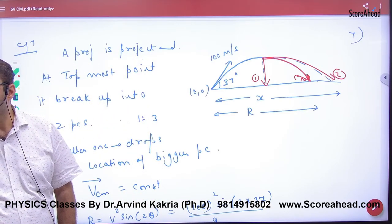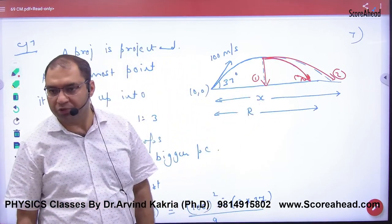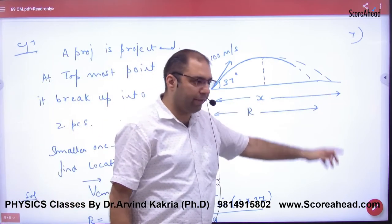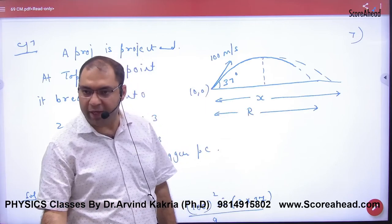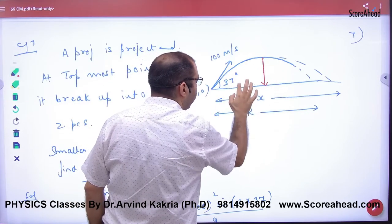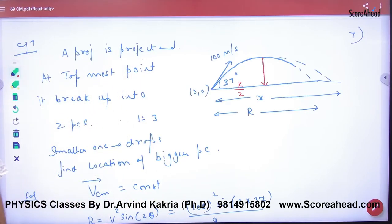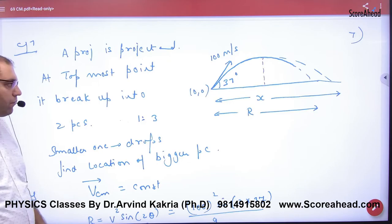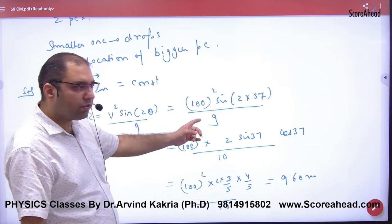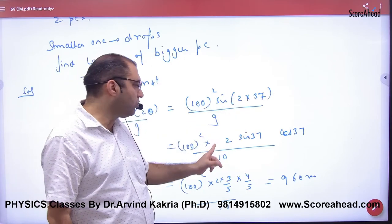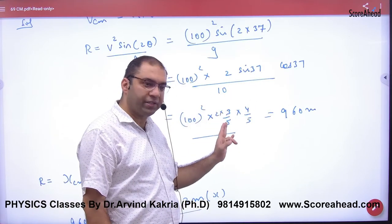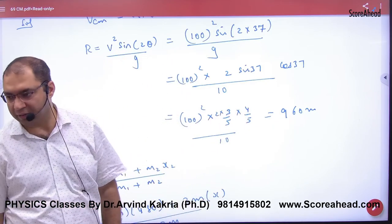One piece here, one piece here, then center of mass is in between. So other piece must land beyond R. Distance x you need to find. Center of mass lands at distance R. Small piece dropped straight down. Small piece landed at R by 2. First find R, range formula V square sine 2 theta by g. Velocity known, theta 37. Sine 2 theta formula in maths is 2 sine theta cos theta. Remember values - cos 37 is 4/5, sine 37 is 3/5. Solving, range comes 960 meters.